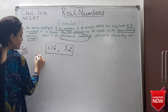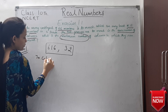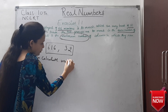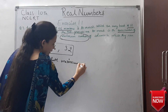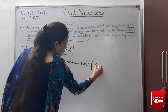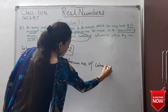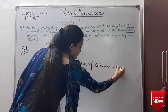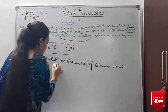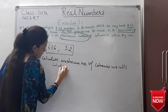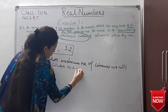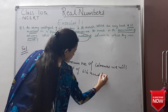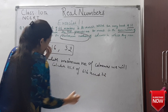So in the solution, we will find the HCF. We can write: to calculate the maximum number of columns, we will calculate the HCF of 606 and 32. Everyone knows how to calculate HCF.